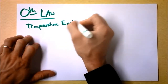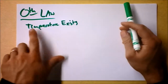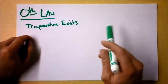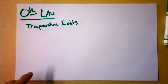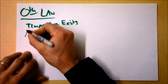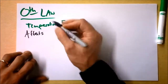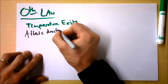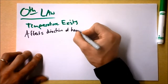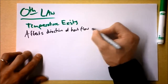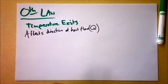It's that thing that when two objects have been in contact forever, they will approach the same temperature. Temperature also affects the direction of heat flow, and I'm going to call that Q — heat flow.